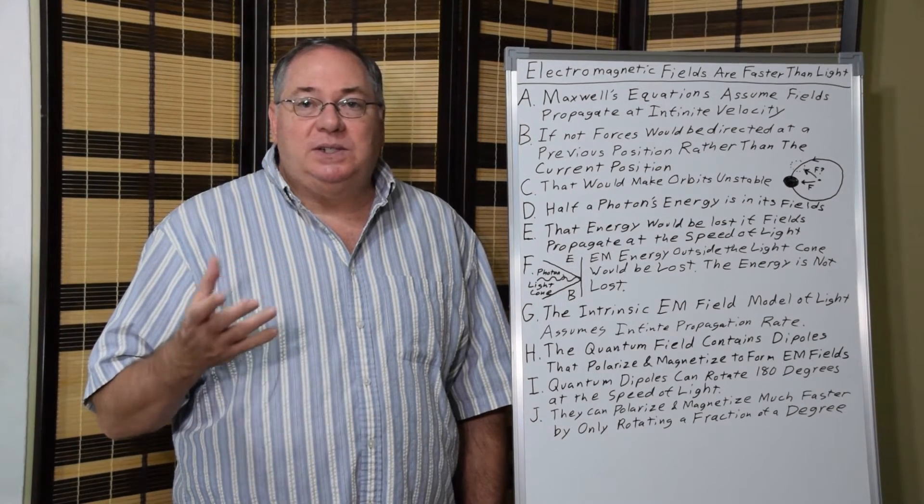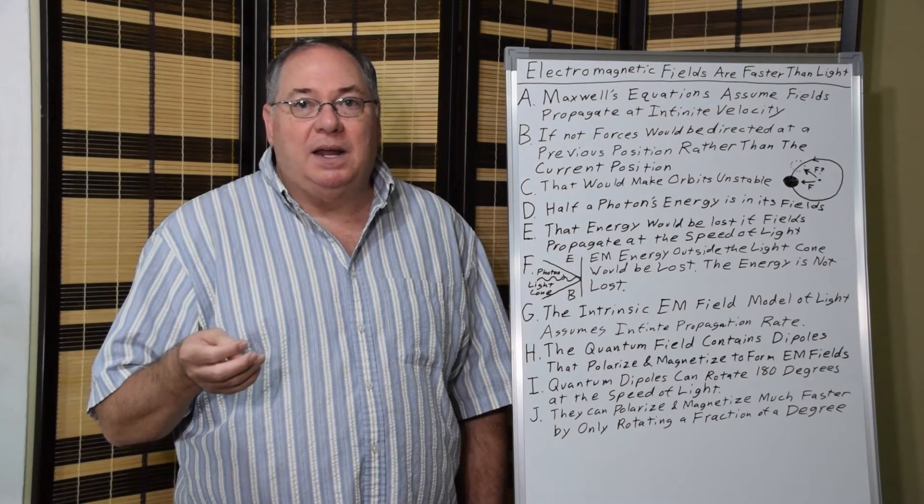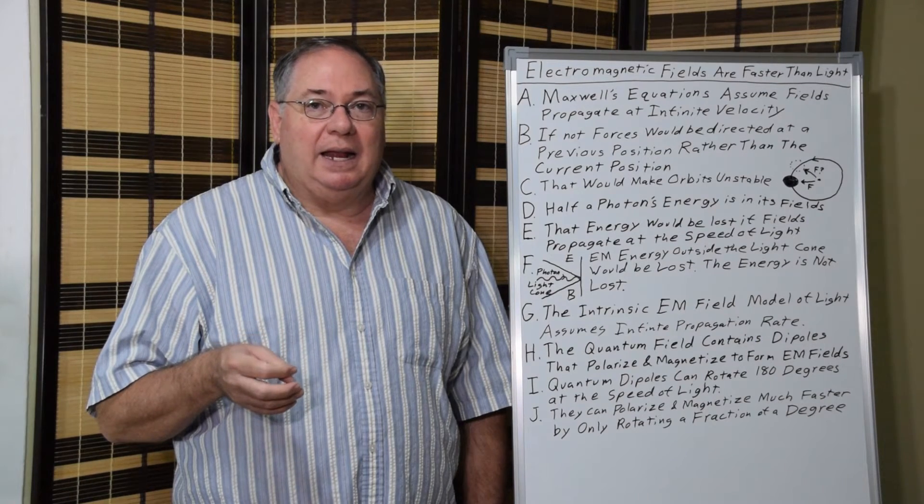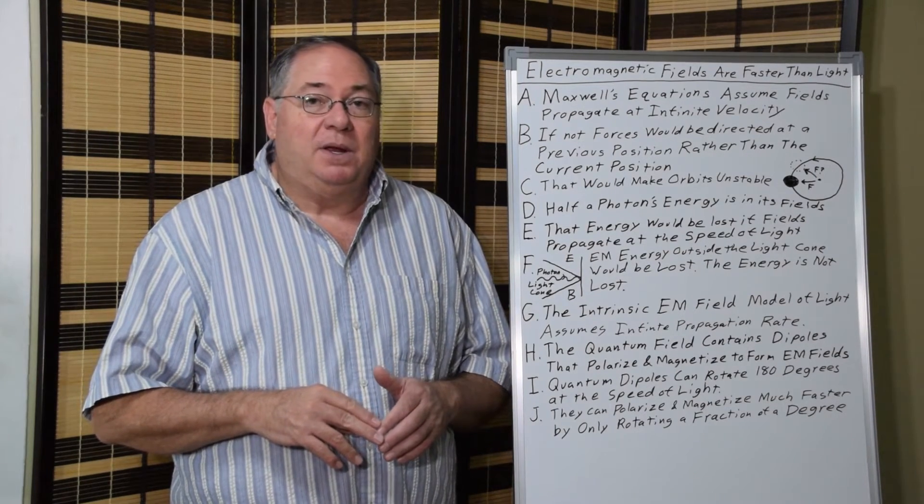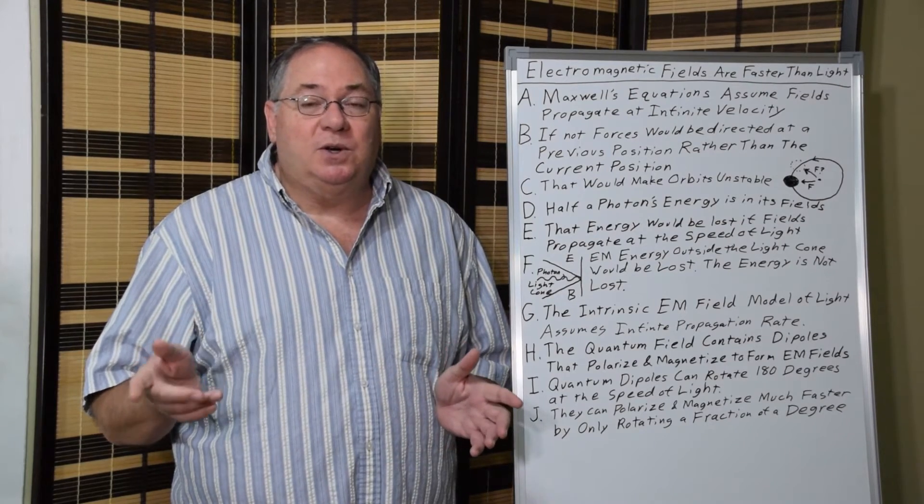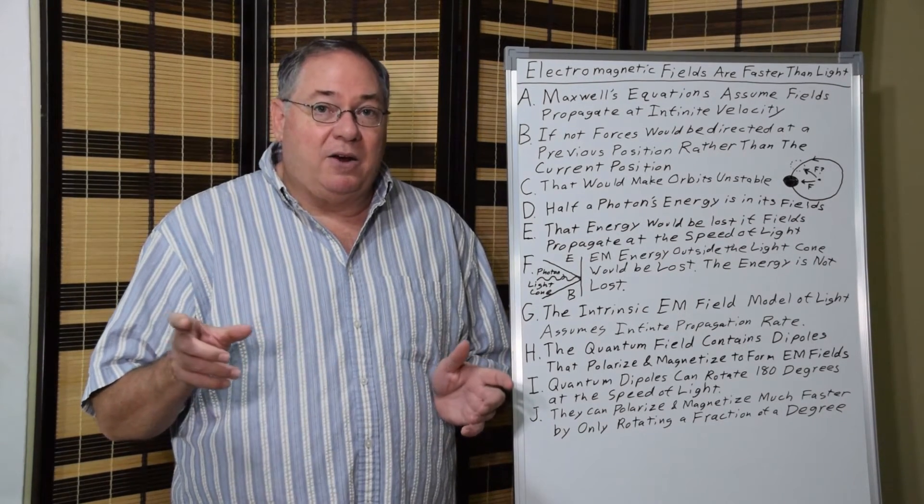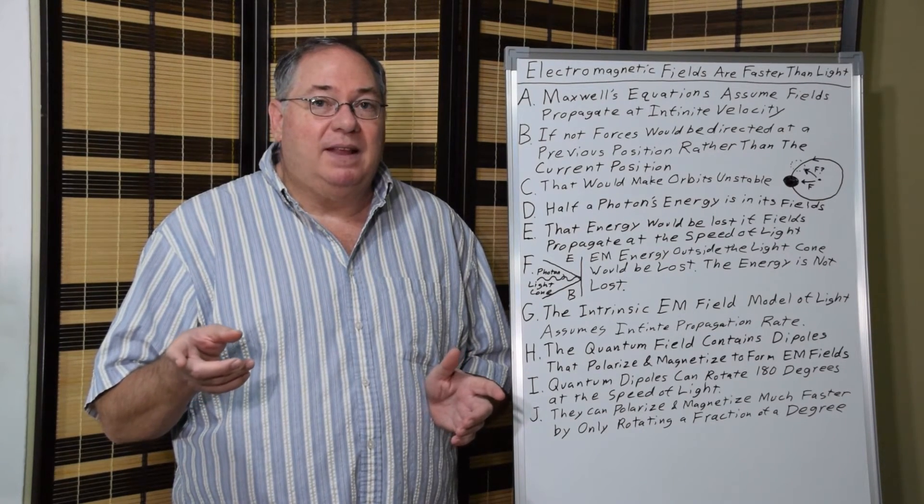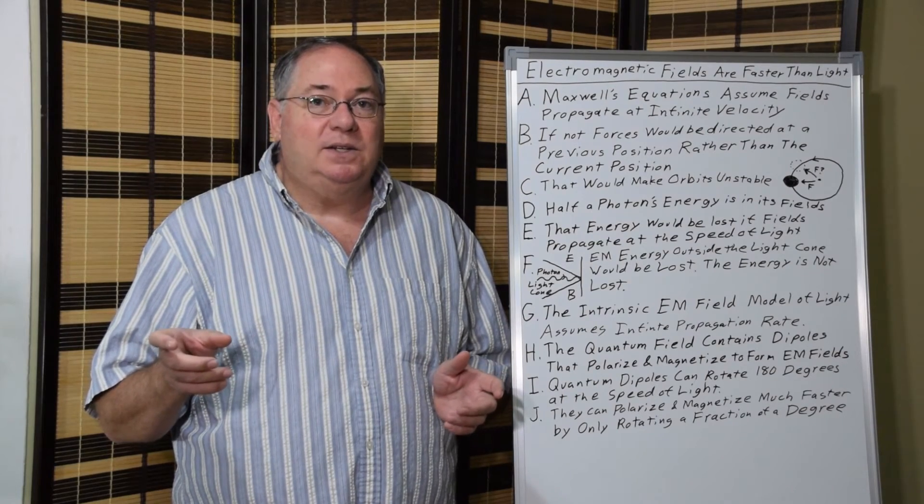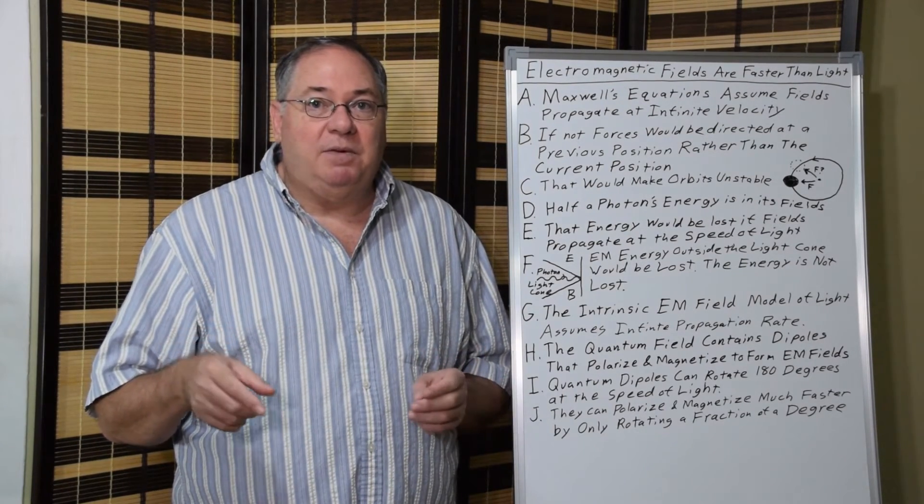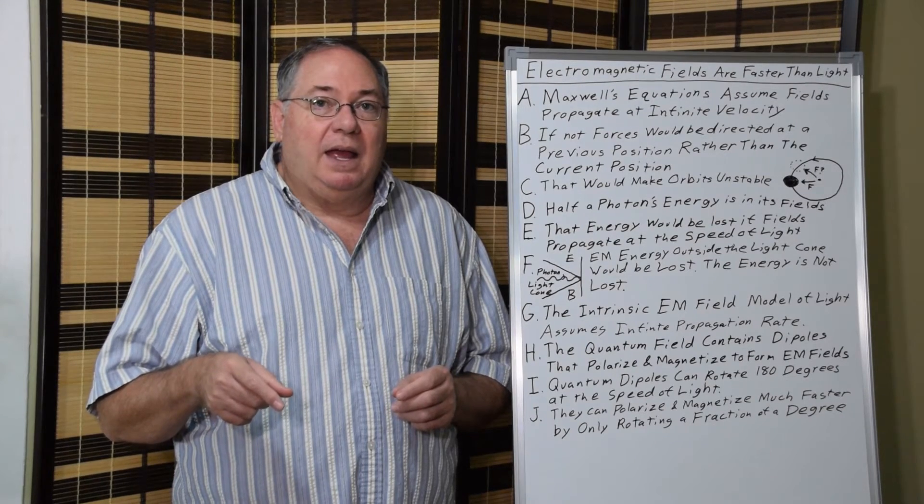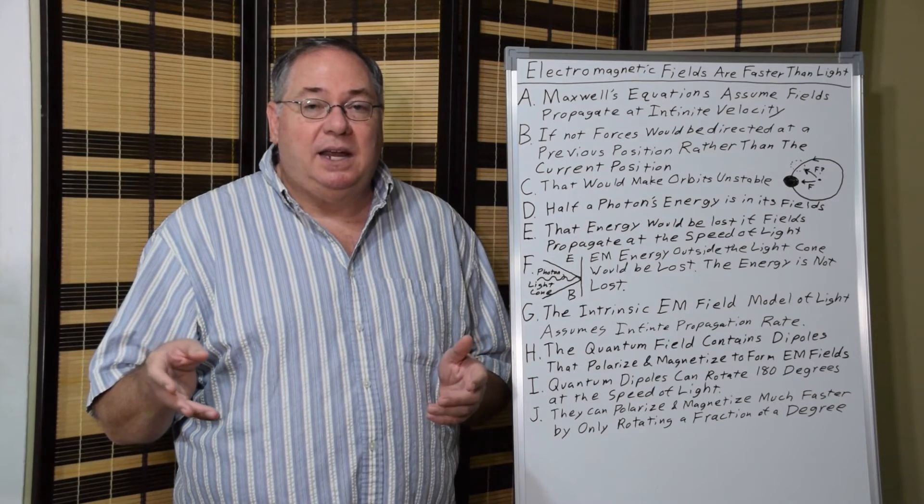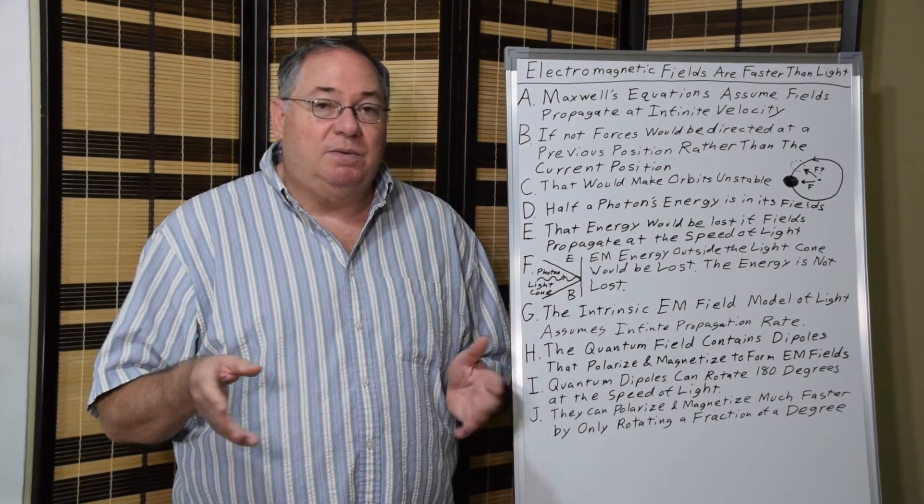And so this causes many phenomena that are popularly talked about. Things like quantum entanglement, because any two particles that are in quantum entanglement are coupled by their electric and magnetic fields. Even if they're separated by a distance, even if they're separated by a distance where a signal traveling at the speed of light would be delayed.